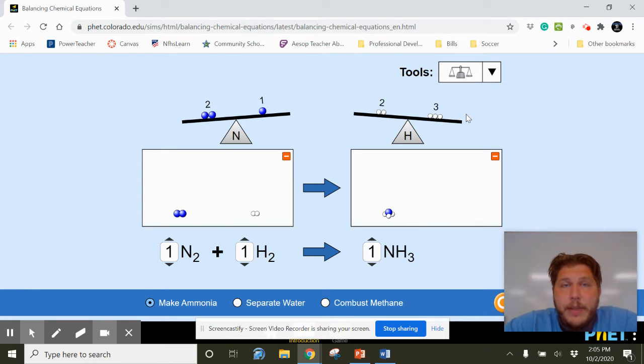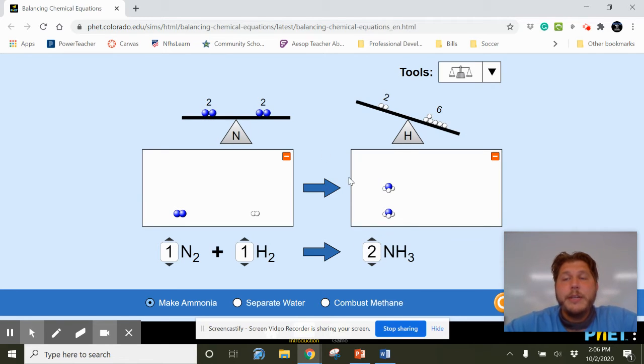So what we can do is I can throw that balance up there and now we can see that our nitrogens are not balanced, our hydrogens are not balanced. We want them to be equal so that both of these scales have to be equal. One of the first things is just start balancing one element at a time. So let's balance the nitrogen first. To do that we need to bring in another NH3 because we need two nitrogens. Oh look at that, nitrogen is now balanced.